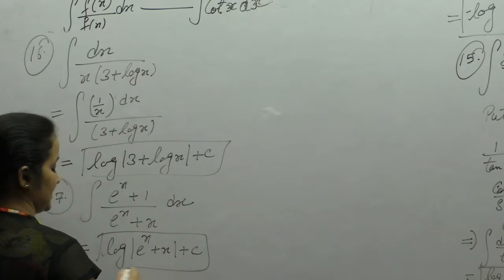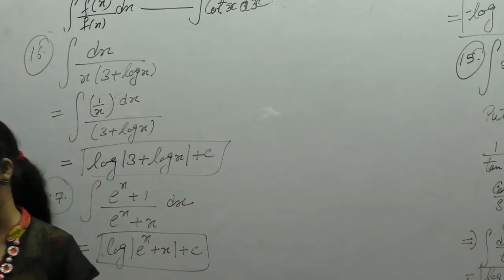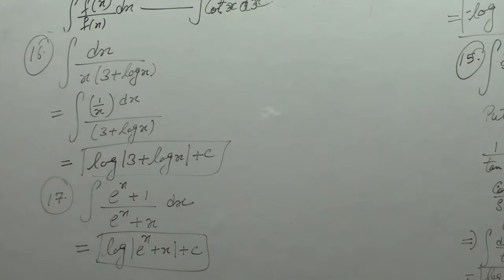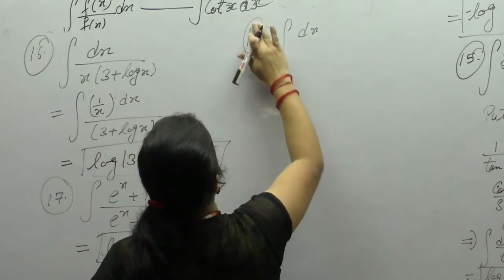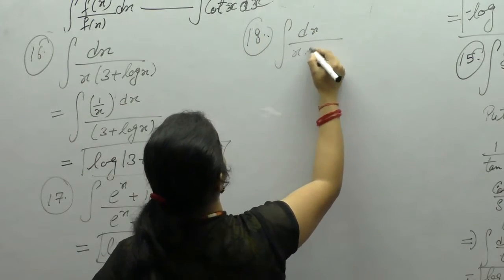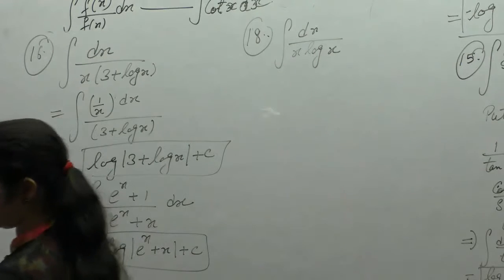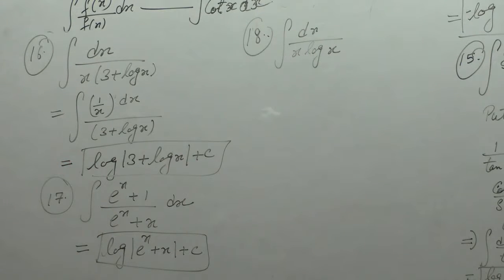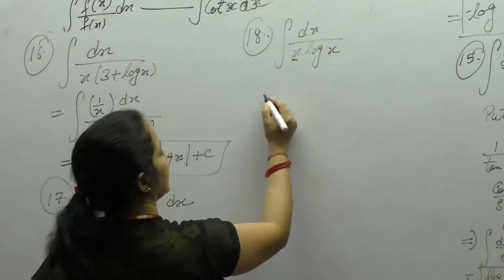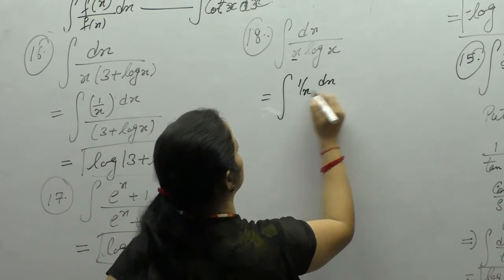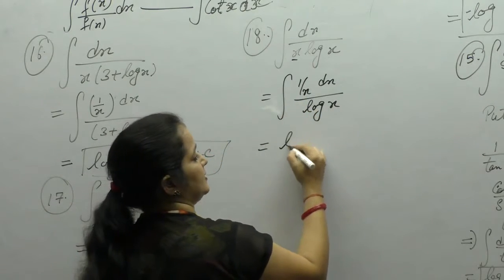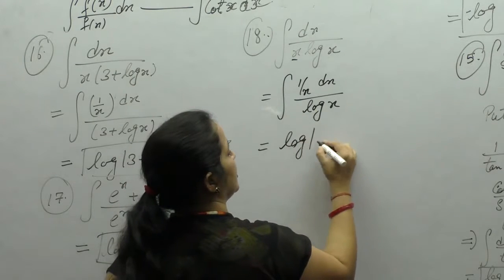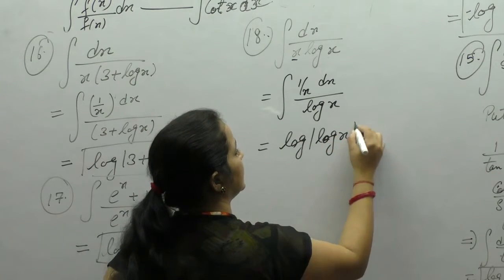We can do all these sums by putting the denominator as t also. Next is integration of 1/(x·log x). We can write x in the denominator as 1/x. The derivative of log x is 1/x, so applying f'(x)/f(x) = log(f(x)), the answer is log(log x) + c.